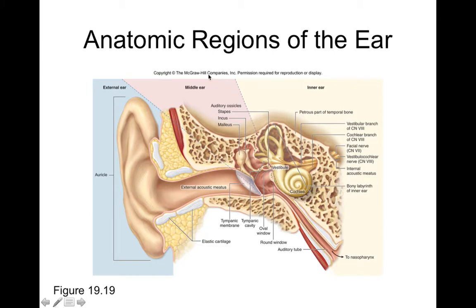The middle ear is this region shown in pink. The middle ear contains a sort of air-filled cavity, which has the tympanic membrane on the other side, associated with the auditory ossicles — a series of bones that transmit vibration for sound — as well as the opening to the pharyngotympanic tube, also called the auditory tube or eustachian tube.